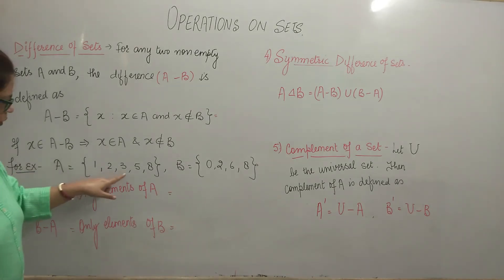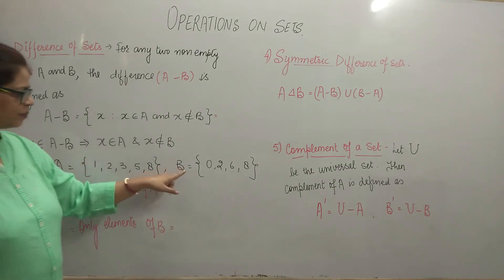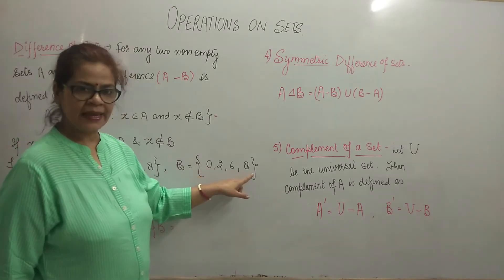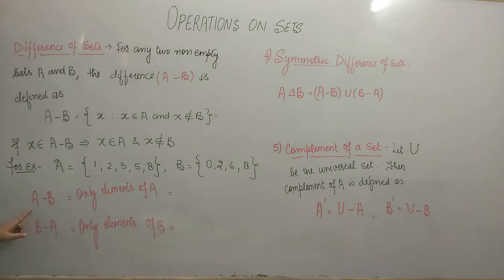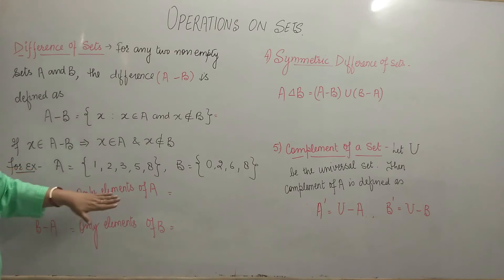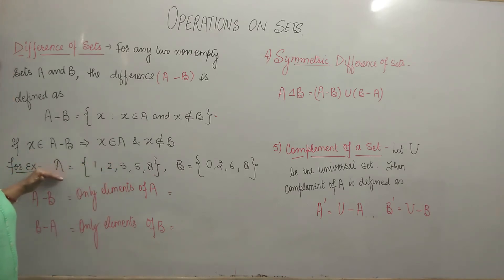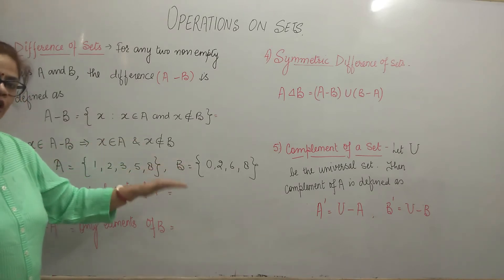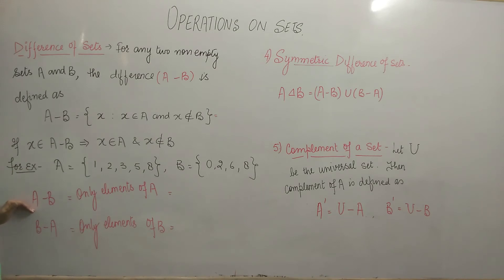Let us take set A having elements 1, 2, 3, 5 and 8, and set B having elements 0, 2, 6, 8. Let us find A minus B. A minus B means only elements of A — the elements which are common to A and B will not be part of A minus B.